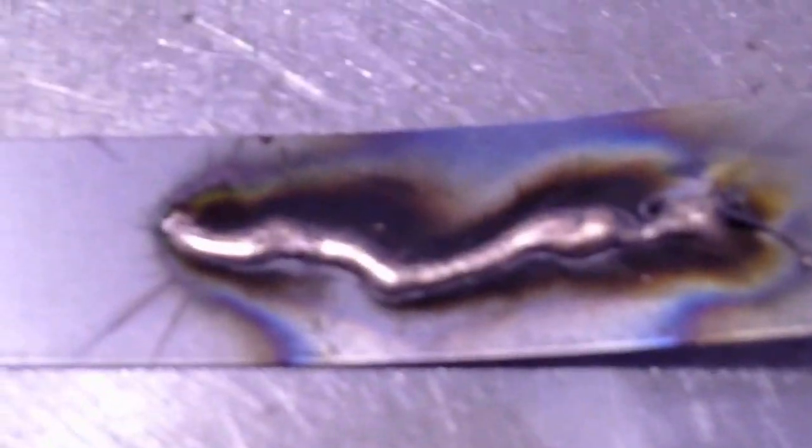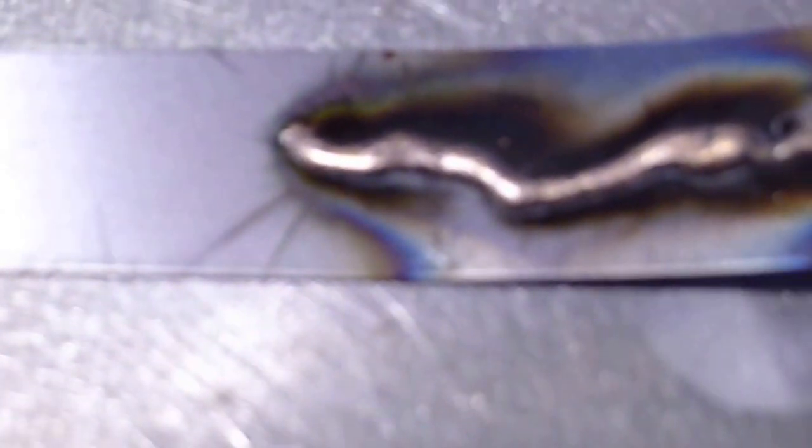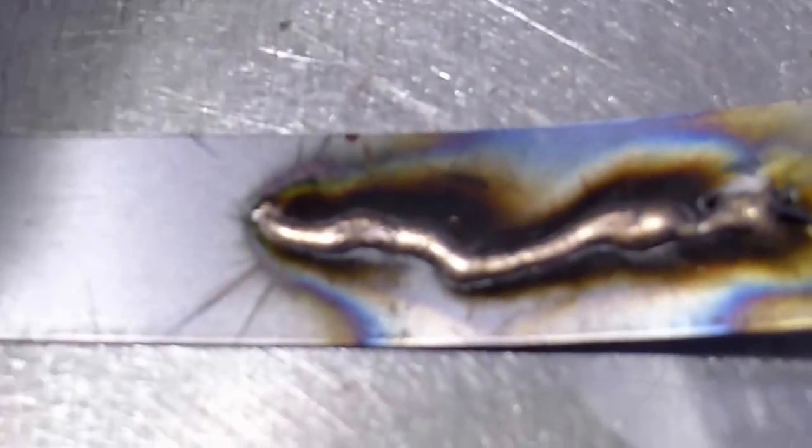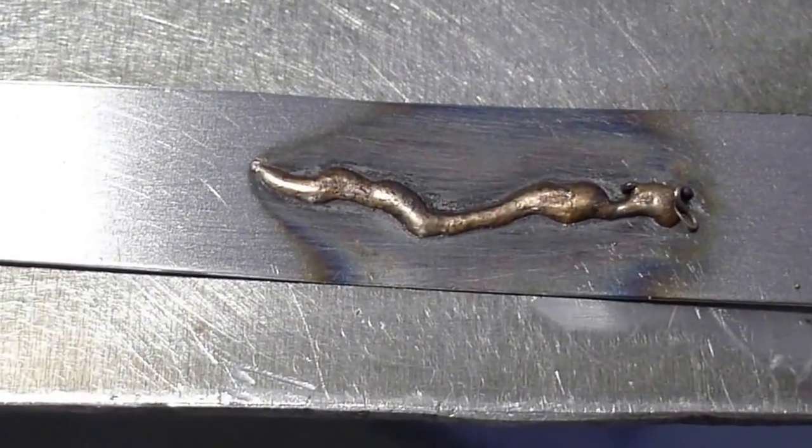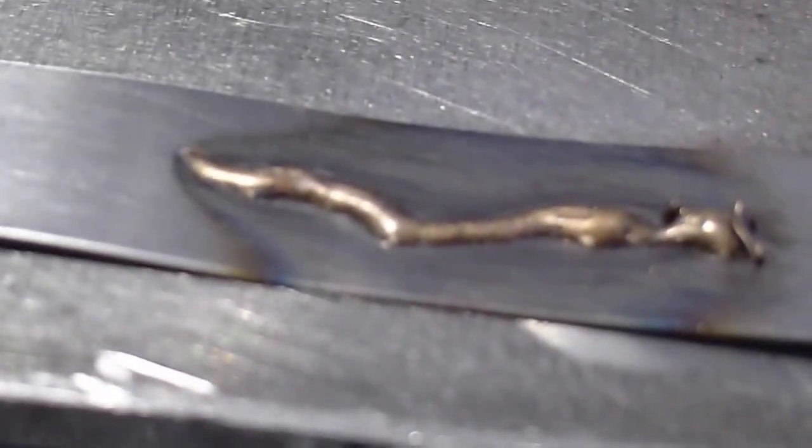Here we go with the MIG brazing. Let me take the helmet off and there is the bead I laid down. If I clean it off you will see that it is bright shiny brass. There it is cleaned up a little bit, it just sits on the surface. If I look at the height, it sits up on the metal which is what it's supposed to do.